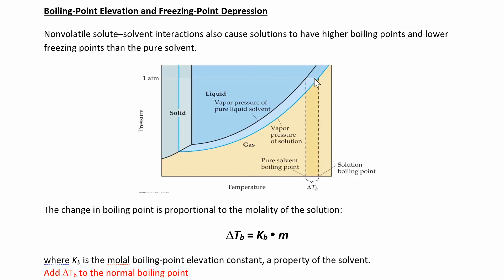This is the difference right here. You can see that's the delta Tb. So this is the normal boiling point and then this is what happens when you add a certain amount of solute to it to make a solution. So that blue line is the solution.